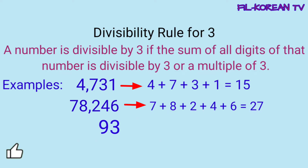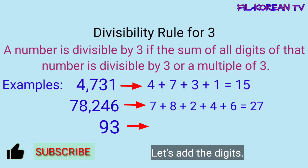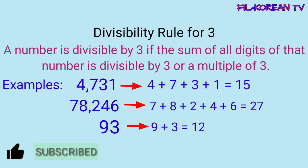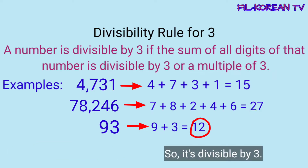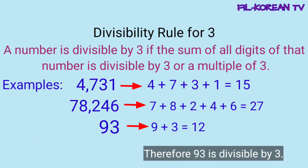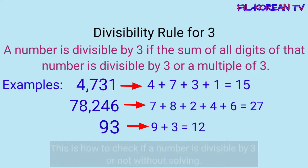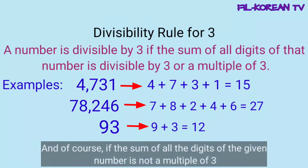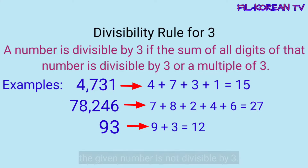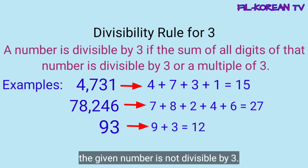Last example, 93. I-plus natin yung digits. 9 plus 3 equals 12. Ang 12 ay multiple ng 3. So, divisible by 3 ito. Kaya naman, yung given number na 93 ay divisible din ng 3. Ganito lang ang pag-check kung ang isang number ay divisible ng 3 o hindi kahit hindi tayo mag-solve. At syempre, kapag yung sum ng digits ay hindi multiple ng 3, automatic yung given number ay hindi rin divisible by 3.